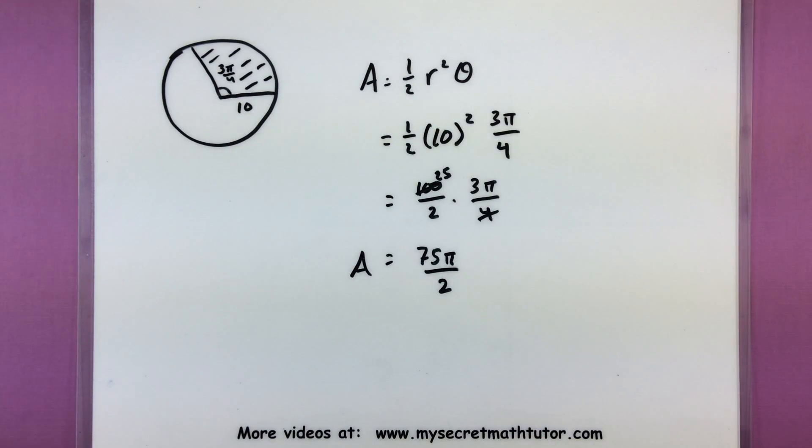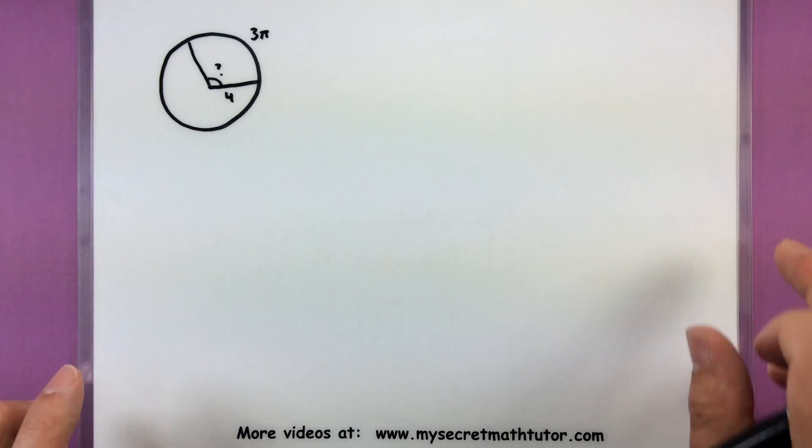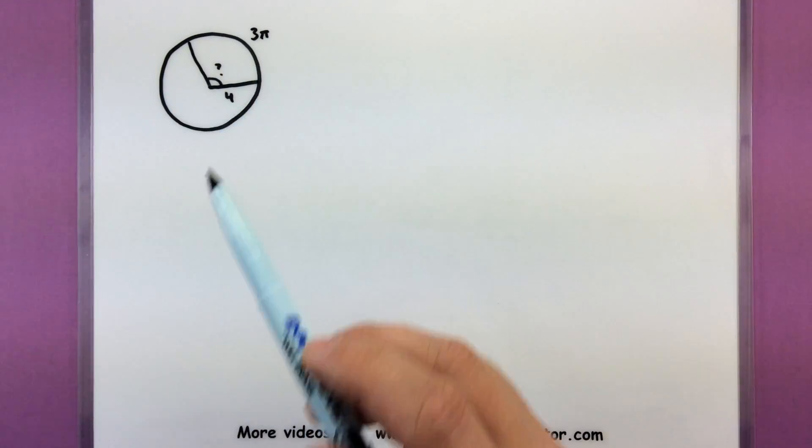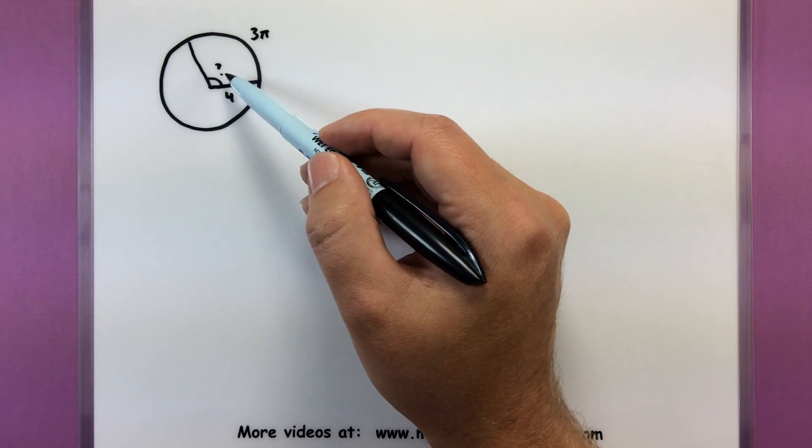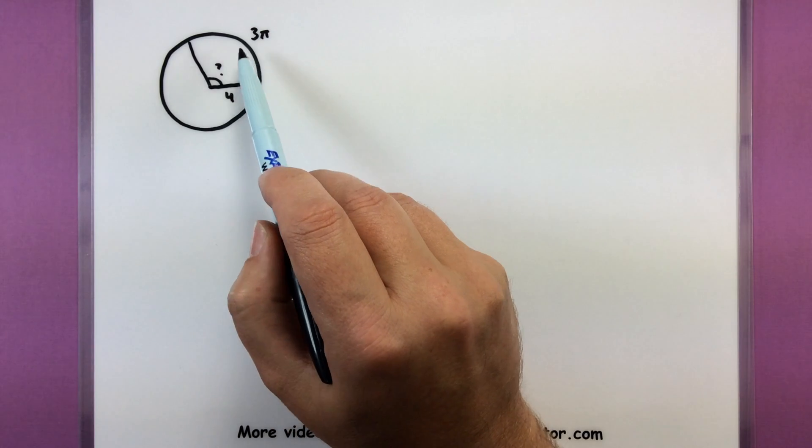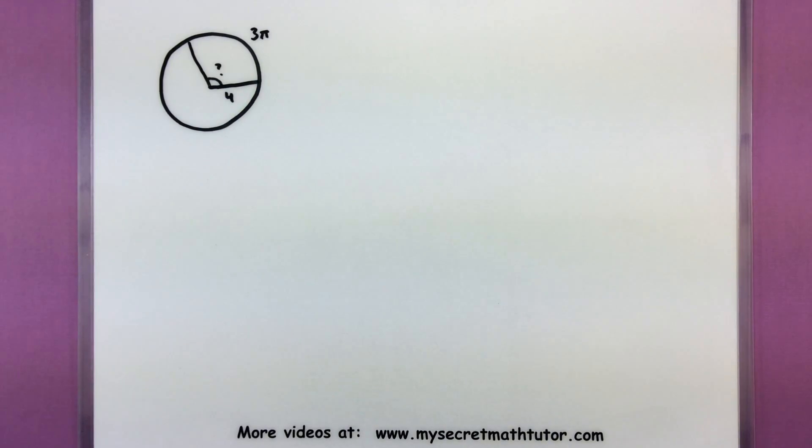All right, let's do one more example and see how this one turns out. So for this one I have a circle, has a radius of 4, but I don't really know what the angle is on the inside. What I do know is it has this little arc out here, and the arc is 3π.